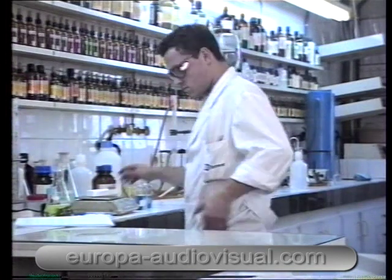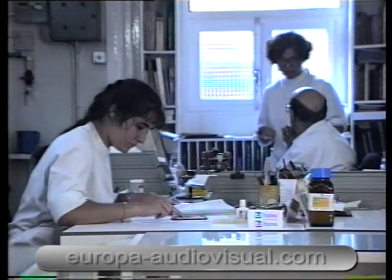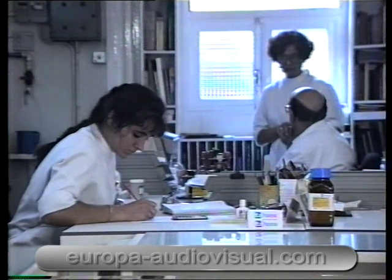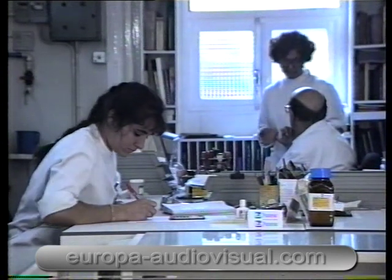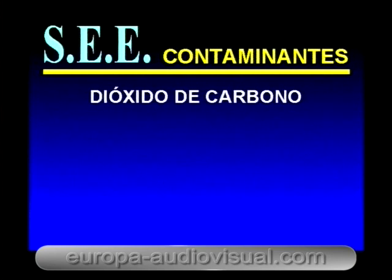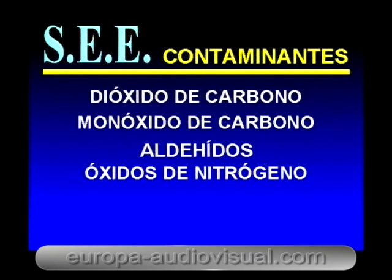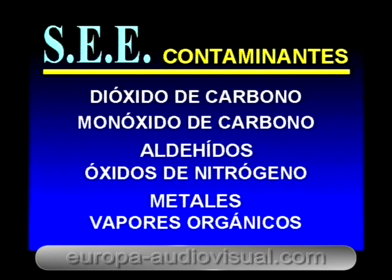Son numerosos los factores de riesgo que se pueden considerar en el caso de un edificio enfermo. En los próximos dos capítulos haremos referencia a la presencia en el medio ambiente interior tanto de compuestos químicos como de agentes biológicos. El número de posibles contaminantes es elevado y sus orígenes pueden ser muy diversos. Los más significativos, entre otros, son dióxido de carbono, monóxido de carbono, aldeídos, óxidos de nitrógeno, metales y vapores orgánicos. Posteriormente los estudiaremos con detalle.